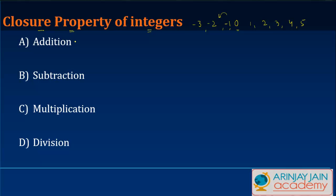Now what we need to see is whether the integers are closed under various operations. What that means is: let's say this is the box within which all the integers lie. When you perform these operations on numbers within this box, is the output again within the box, or is it lying outside? If it is within the box, we say that the integers are closed under that operation.